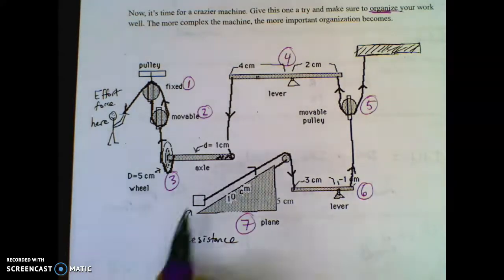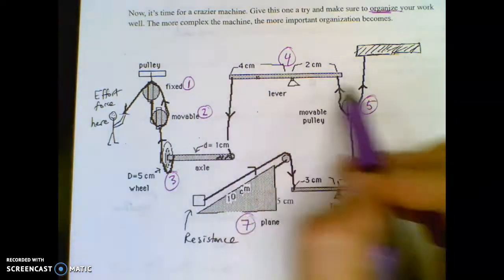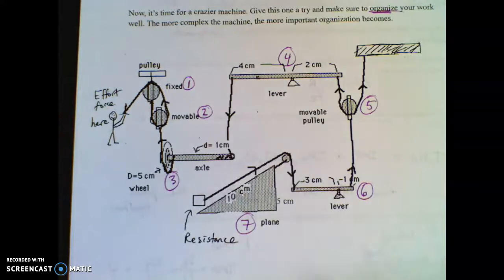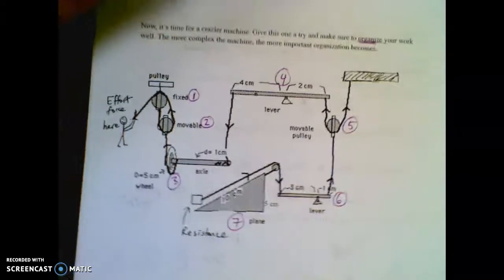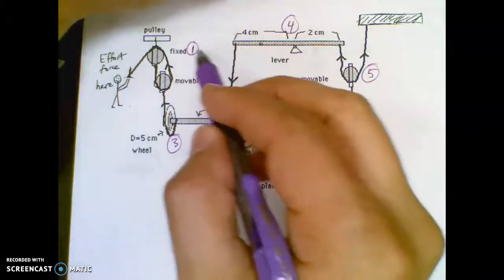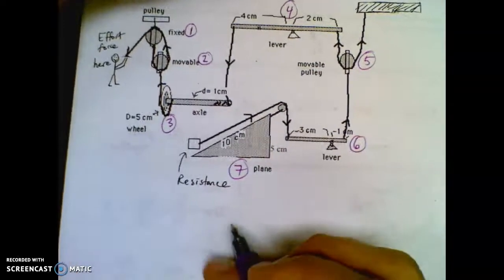If you look at it, I got seven shapes. I got a fixed pulley, a movable pulley, a wheel and axle, a lever, a movable pulley, a lever, and an inclined plane. That's just a wall it's tied to. So I want to go through every one of them. If I want the total compound machine IMA, I'm going to multiply all the individual IMAs. So here we go.